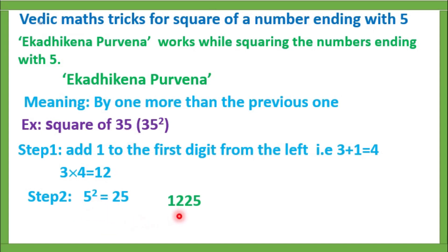Write it all together, that is 1225. So 35 square equals 1225.